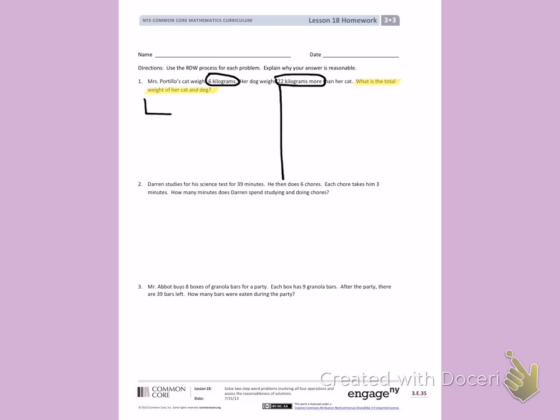Her cat weighs 6 kilograms. Her dog weighs 22 kilograms more. I need to find out how much her dog weighs. In this problem, D is going to stand for dog. When I look at my tape diagram, I have two parts, but I am missing the total. My parts are not equal, so I cannot multiply those two numbers. Since I am missing the total, I can solve.